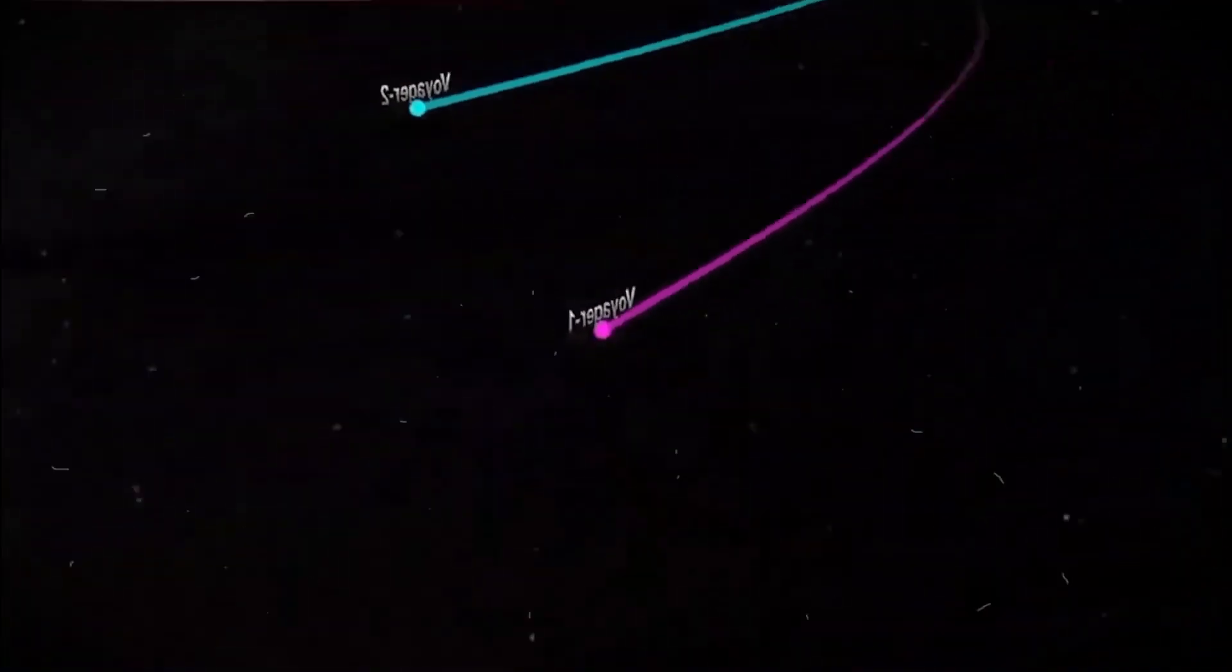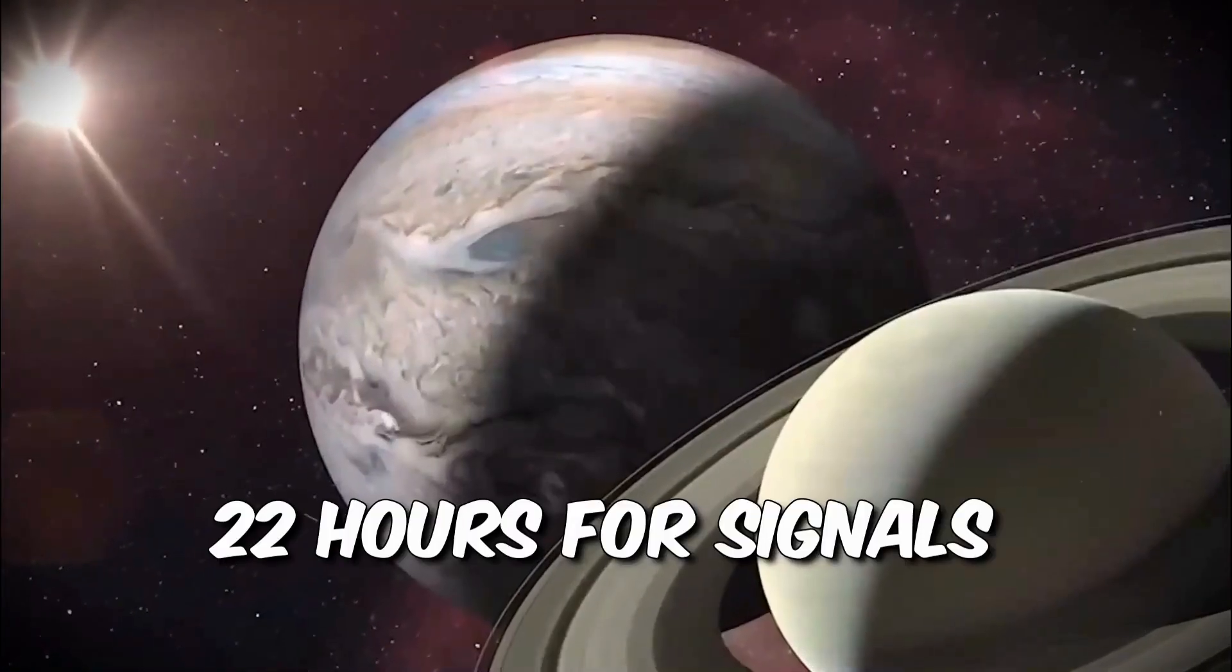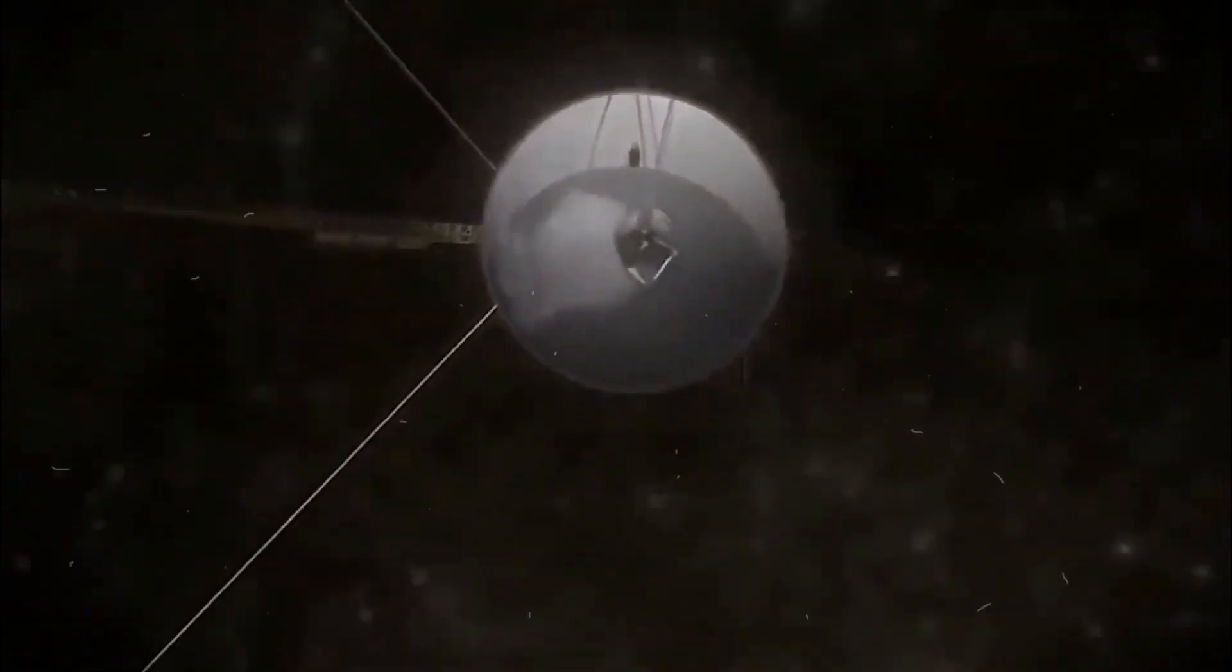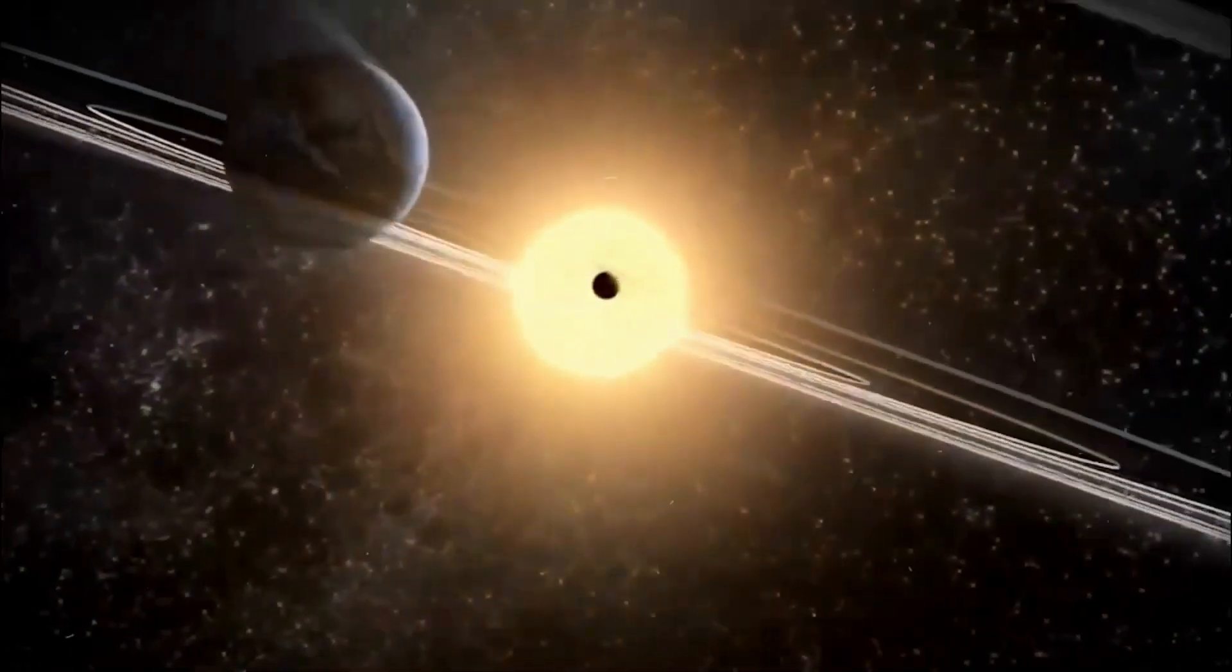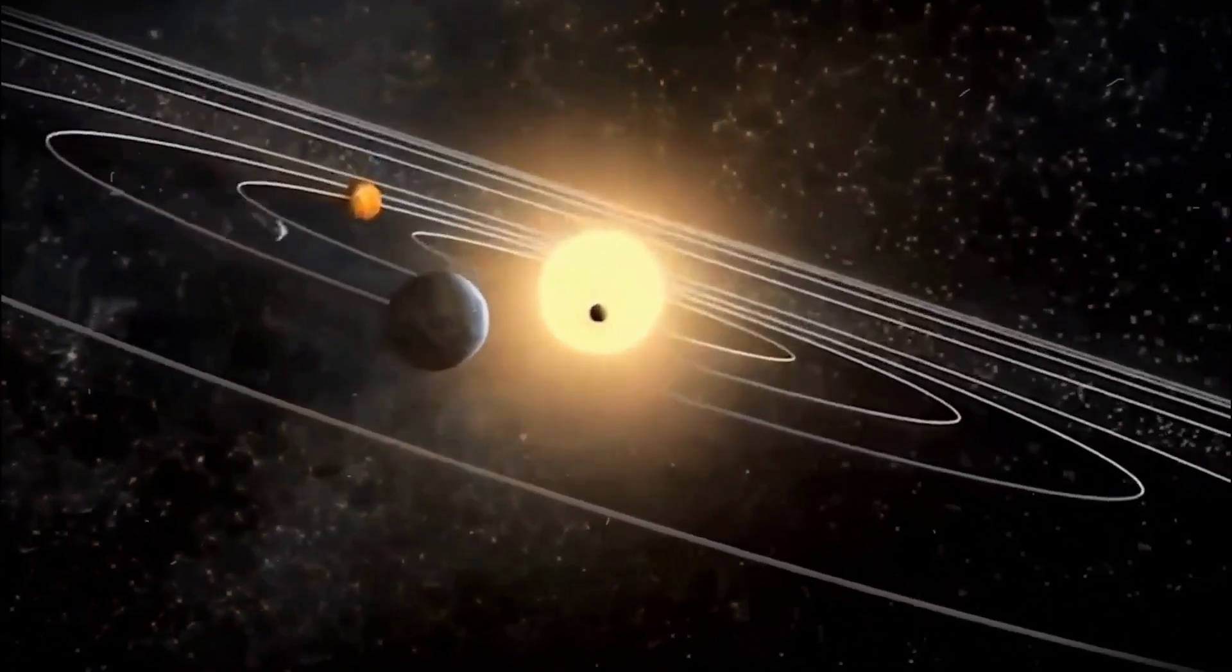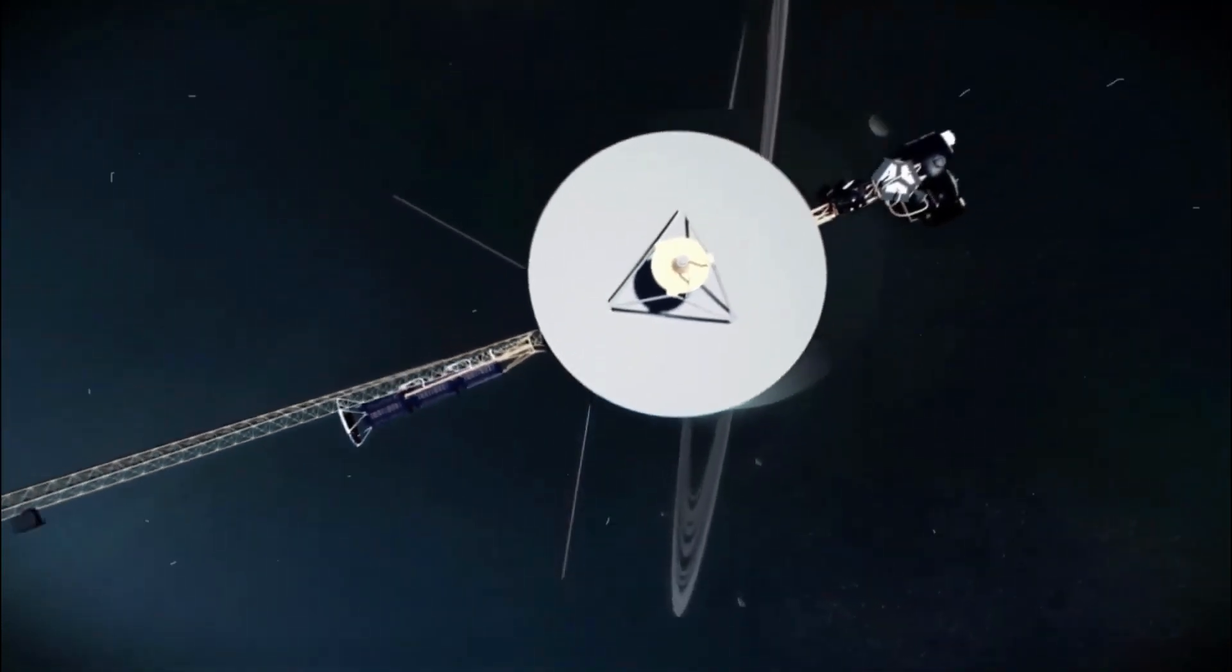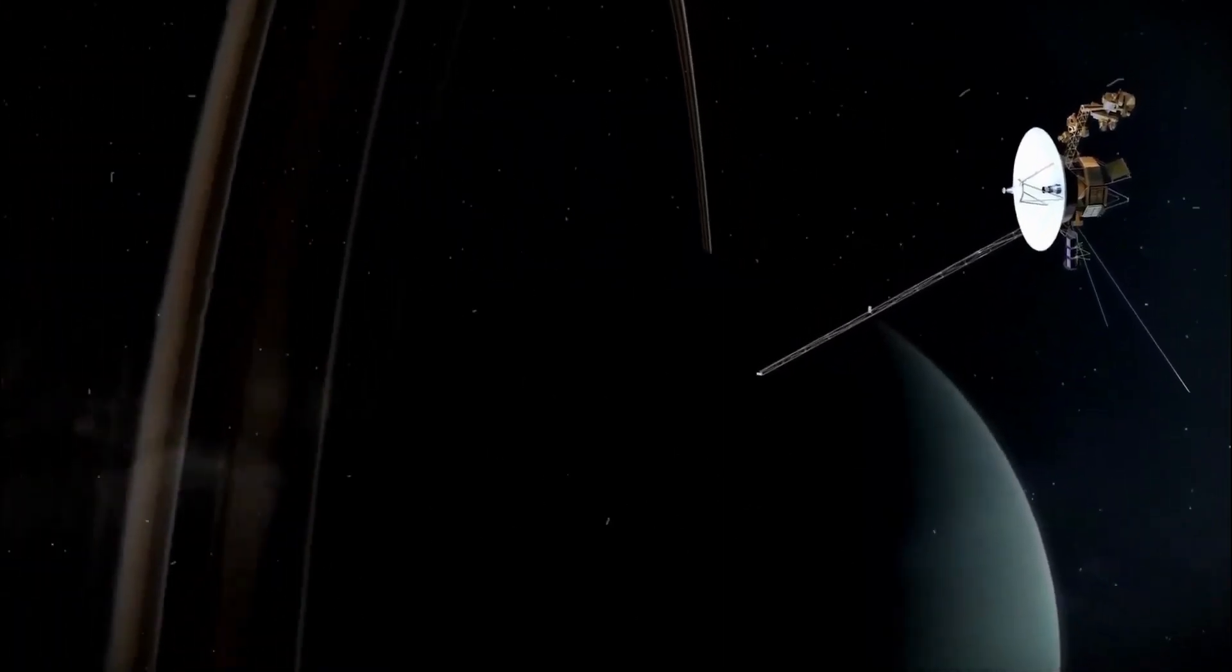But here's the catch. Even though we're using the speed of light to communicate, it still takes a whopping 22 hours for signals to travel between Earth and Voyager 1. Imagine sending a text message and waiting nearly a whole day for a response. Patience is key, my friends.